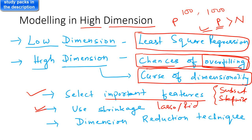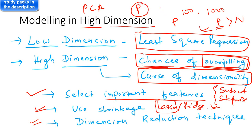Using Lasso, you can eliminate a number of unimportant variables. With Ridge, you can bring the coefficients of unimportant variables close to zero. Another approach is dimensionality reduction techniques, the popular ones being Principal Component Analysis (PCA), which combines correlated variables. When you have high dimensions with a large number of predictor variables, they are most likely correlated, so PCA can produce a smaller set of variables by combining them.